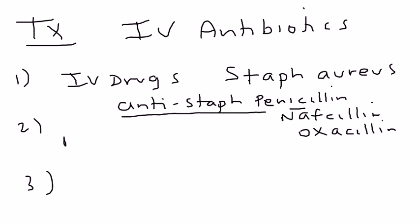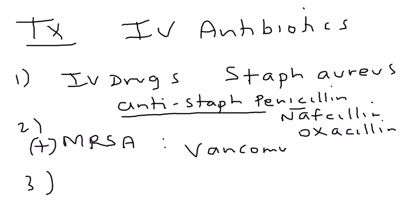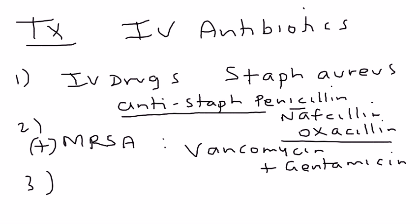The second one is if you have MRSA — methicillin-resistant Staph aureus. If that is identified as the causative bacteria, then you would give vancomycin, and vancomycin is given with gentamicin. Endocarditis antibiotic regimens are very complex with many options, so I'm trying to break it down into just three basic regimens.